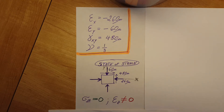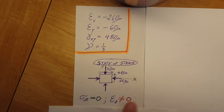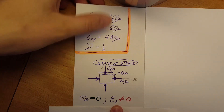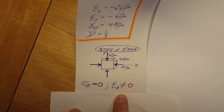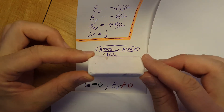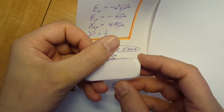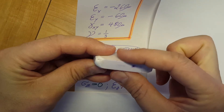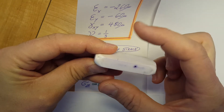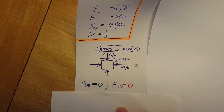We write it down: stress in the z direction equals zero. But at the same time, strain in the z direction will not necessarily be zero. For example, if this were a sponge or something very soft, you could easily see that if we stretch it in the x and y directions, its thickness in the z direction would definitely change — so we do have a strain in the z direction.